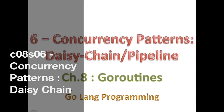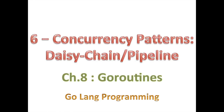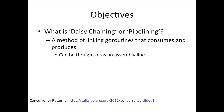Hello, good day and welcome back. We're still talking about Go concurrency patterns. Today we're going to be looking at the daisy chain pattern, which I'll also call pipeline and assembly line. If you don't know what daisy chain is, it's just a matter of linking things together — linking goroutines that consume and produce.